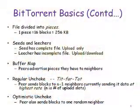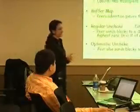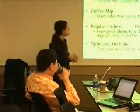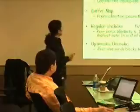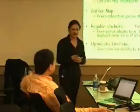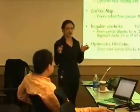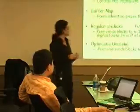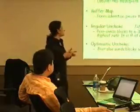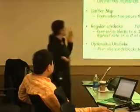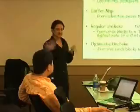Each file is divided into pieces, and each piece is further divided into blocks. Peers share data at the block level, uploading and downloading blocks with each other. In any swarm, there are two different kinds of peers: seeds and leechers. A seed has the complete file — all pieces and blocks. A leecher does not have all the pieces, so it both uploads and downloads blocks simultaneously. Seeds only upload blocks to neighbors or peers.